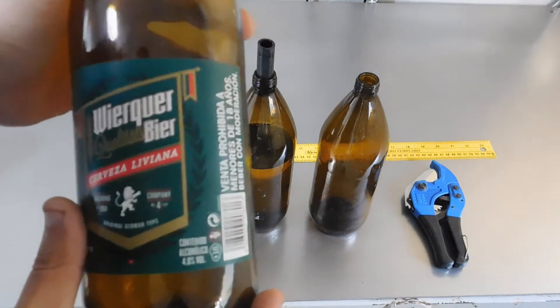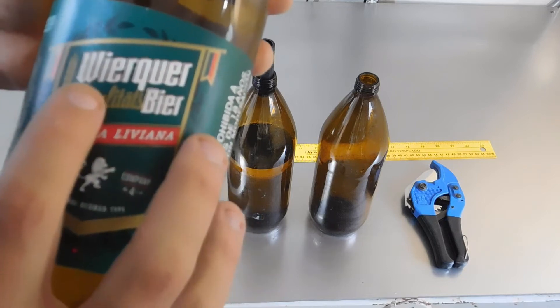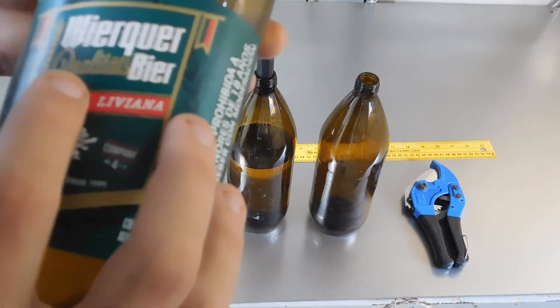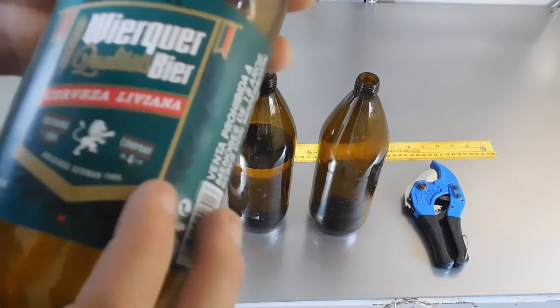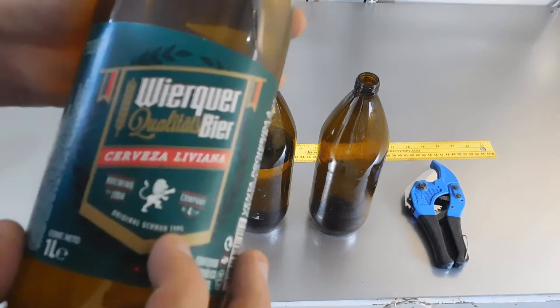Aquí pueden ver la marca de cerveza, que se llama algo así como Werker Qualitas Bier, cerveza liviana. Dice original German type, tipo alemana.